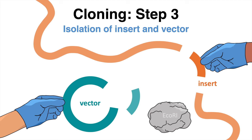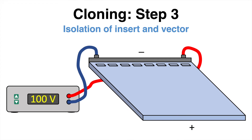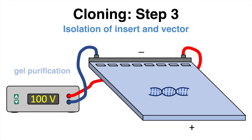Insert and backbone need to be isolated. The enzymes used to digest them, as well as any pieces cut out of them, need to be discarded. This can be done with gel purification. In gel purification, a voltage difference across the gel matrix — usually agarose — is used to pull negatively charged DNA through the gel.